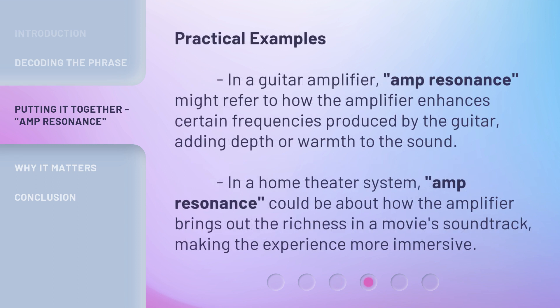Practical examples: in a guitar amplifier, Amp Resonance might refer to how the amplifier enhances certain frequencies produced by the guitar, adding depth or warmth to the sound. In a home theater system, Amp Resonance could be about how the amplifier brings out the richness in a movie's soundtrack, making the experience more immersive.